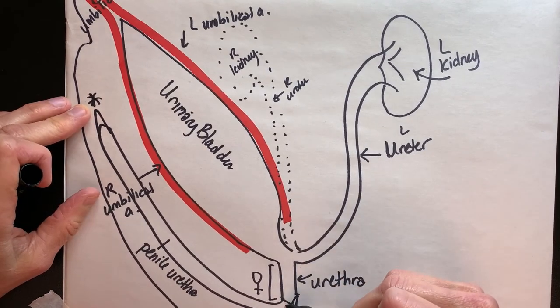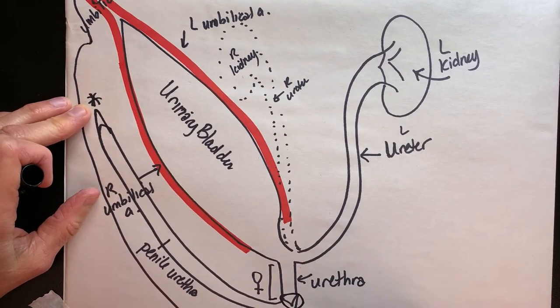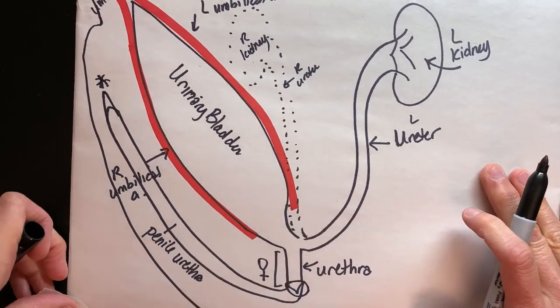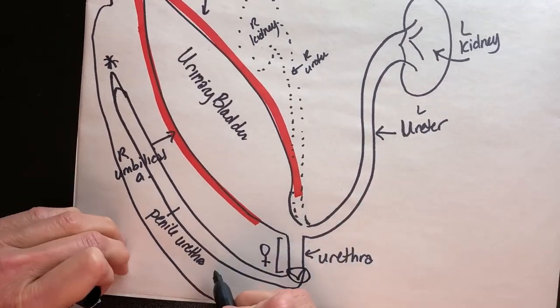In females, the urethral orifice is just going to be here. Males have a much longer journey for urine.